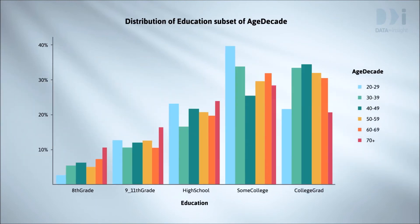We also looked at the relationship between education and age decade using side-by-side bar charts. We highlighted these features for the 70 and over group: the low percentage of college graduates. That's still clearly supported.